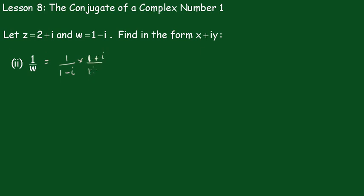1 plus i. Which equals 1 plus i over 1 minus i times 1 plus i is going to be 1. And i times i is minus 1. But the minus makes it a plus. So that's plus 1 equals 2. And the middle terms drop out.